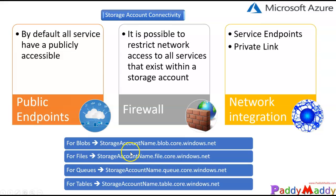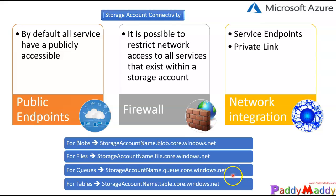Similarly for queues and tables it's the storage account name dot queue or dot table dot core dot windows dot net. The reason we discuss these URLs is so that when you create a container and upload a file to share, you can identify whether it's a blob, file, queue, or table based on the service name embedded in the URL.